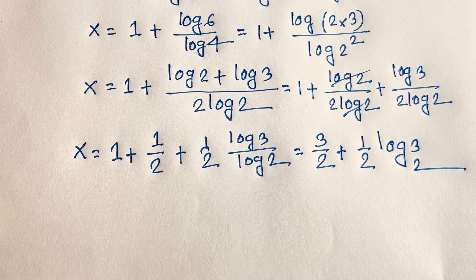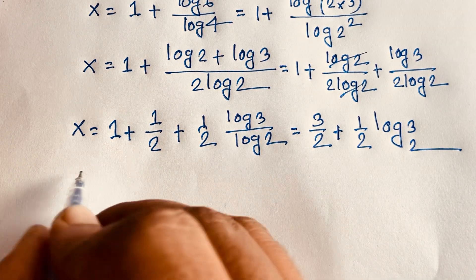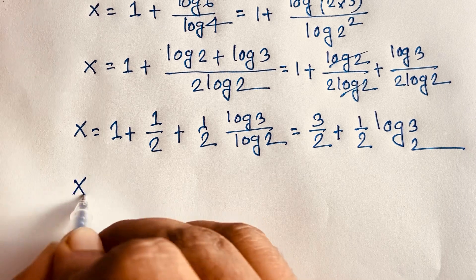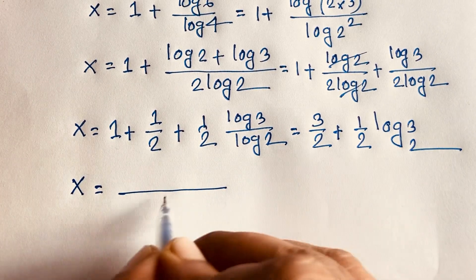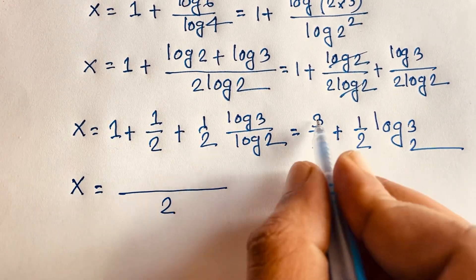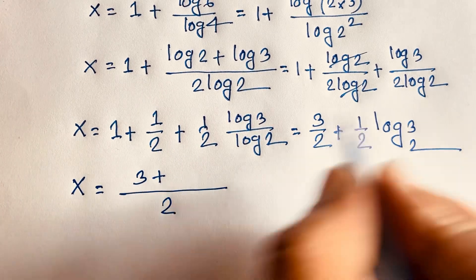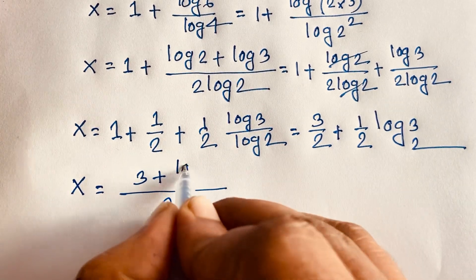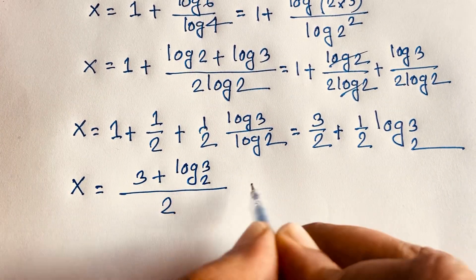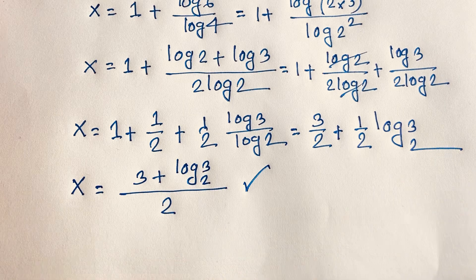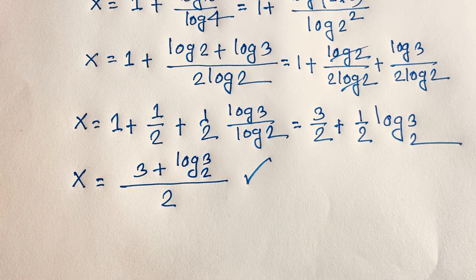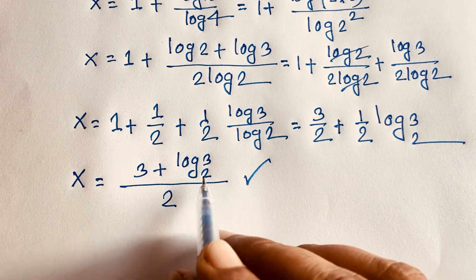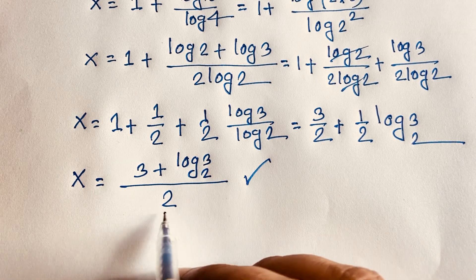Now at this moment, we will find out our final answer. x is equal to, taking the least common denominator of 2, here is 3 plus log base 2 of 3, all over 2. This is our final answer in this junior maths Olympiad question: x is equal to 3 plus log base 2 of 3, over 2.